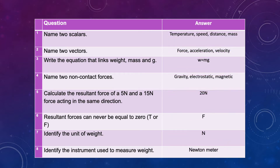So for numbers 1 and 2, temperature, speed, and mass are all good scalars. Force, acceleration, and velocity are all vectors. Number 4 covers the three non-contact forces we talked about in previous lessons. Please make sure that you have all the correct answers and we'll get moving.